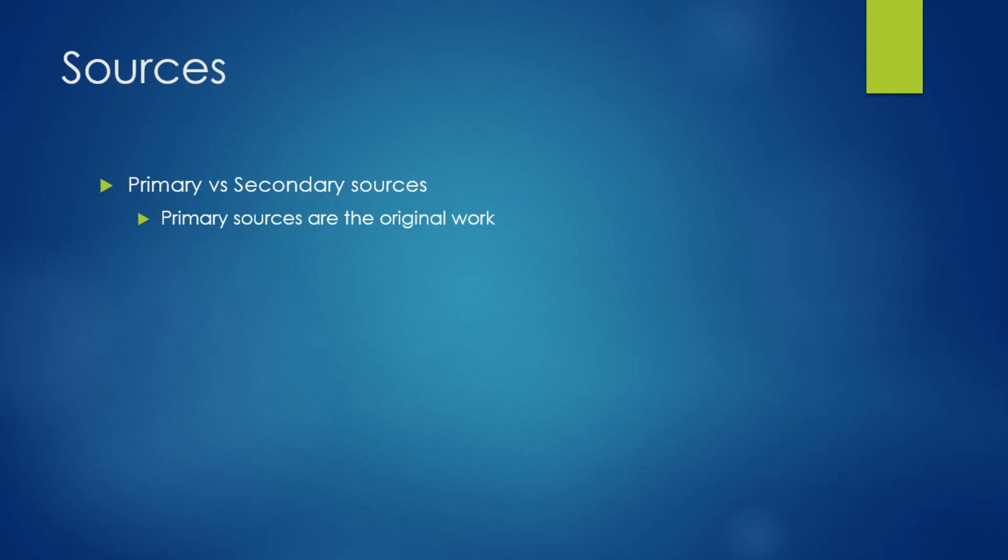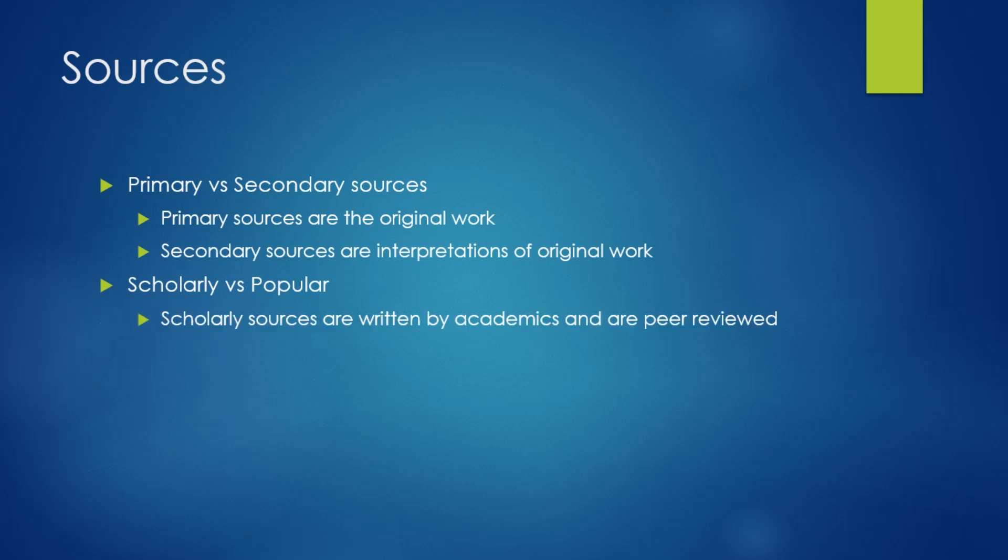We have primary sources and secondary sources. Primary sources are the original work, and secondary sources are interpretations of the original work. It's that simple. You have scholarly versus popular. Scholarly sources are written by academics and are peer-reviewed. Popular sources are pretty much everything else.